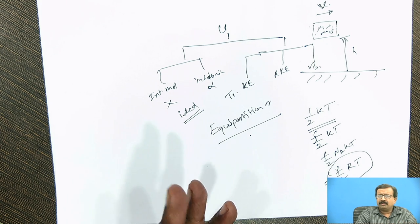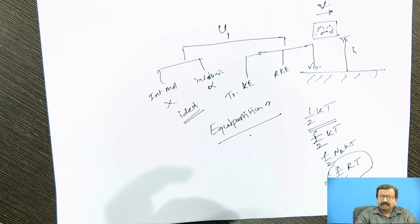For monatomic, there are three degrees of freedom. For diatomic, there are five degrees of freedom. And for nonlinear molecules, there are six degrees of freedom. Now we come to the concept of specific heat.